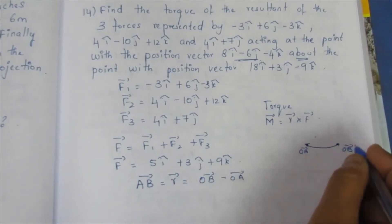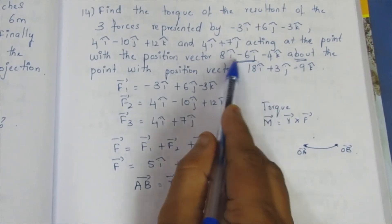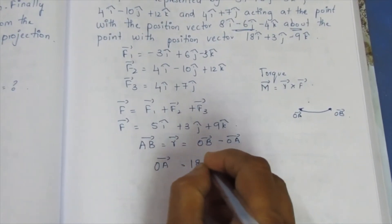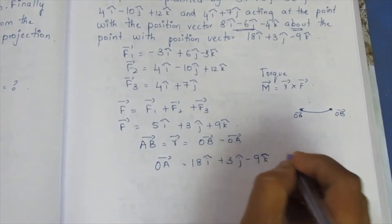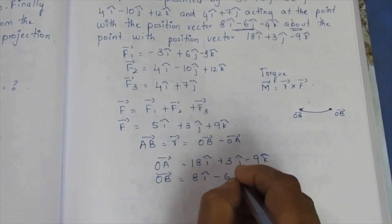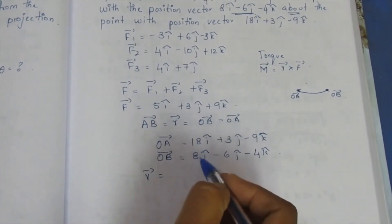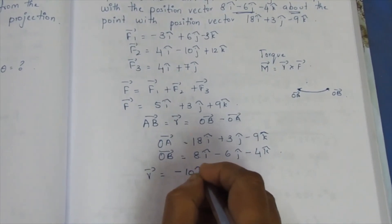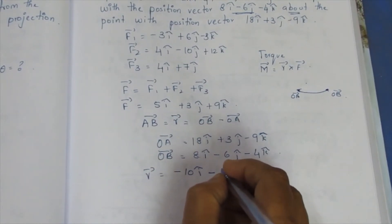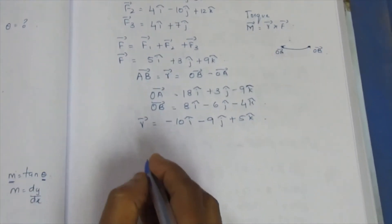So OA-vector is the 'about' point and OB-vector is the 'acting at' point — not to be confused. About the point is OA-vector; acting at the point is OB-vector. So r-vector: this minus this gives 8 minus 18 equals minus 10 for the i-component, minus 6 minus 3 gives minus 9 for the j-component, and minus 4 minus 1 gives plus 5 for the k-component.